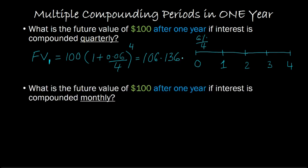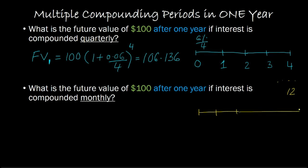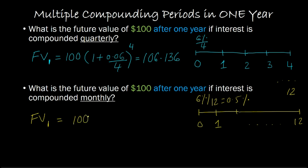If interest is being compounded monthly, you have a timeline that extends out to 12 time periods, where each time period represents one month. Your monthly interest rate is 6 ÷ 12 = 0.5%. The future value of $100 after one year, or 12 months, is 100 × (1 + 0.06/12)¹², compounded 12 times. This will be even higher than before because you're earning interest upon interest even more frequently. This number solves out to $106.167.